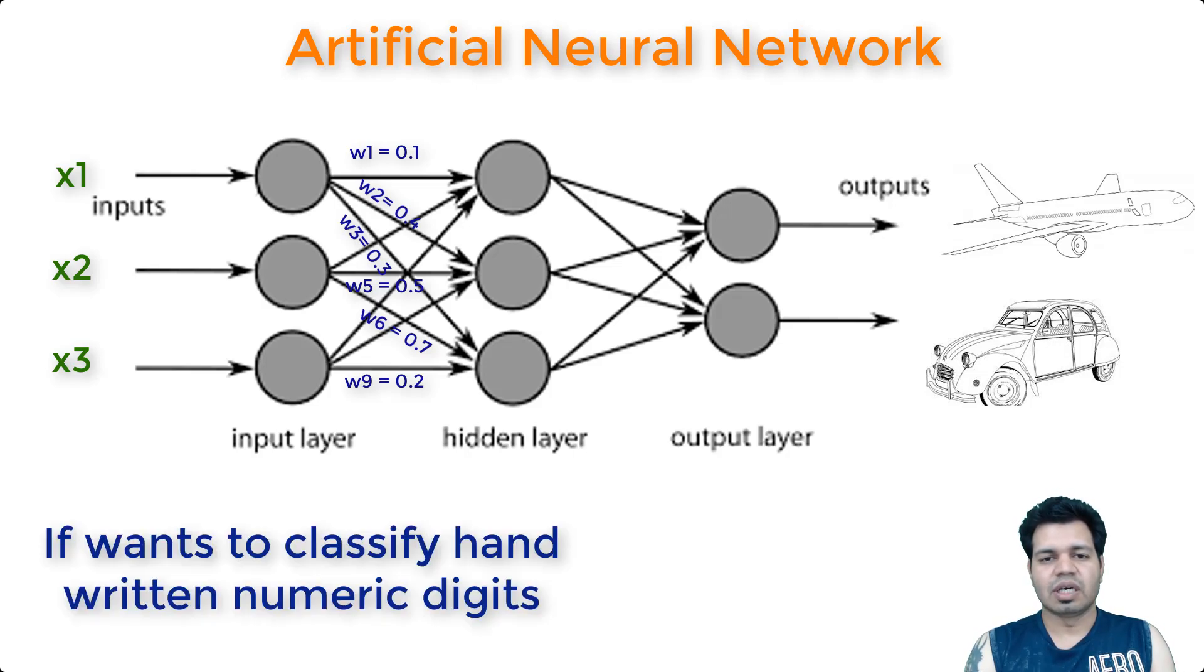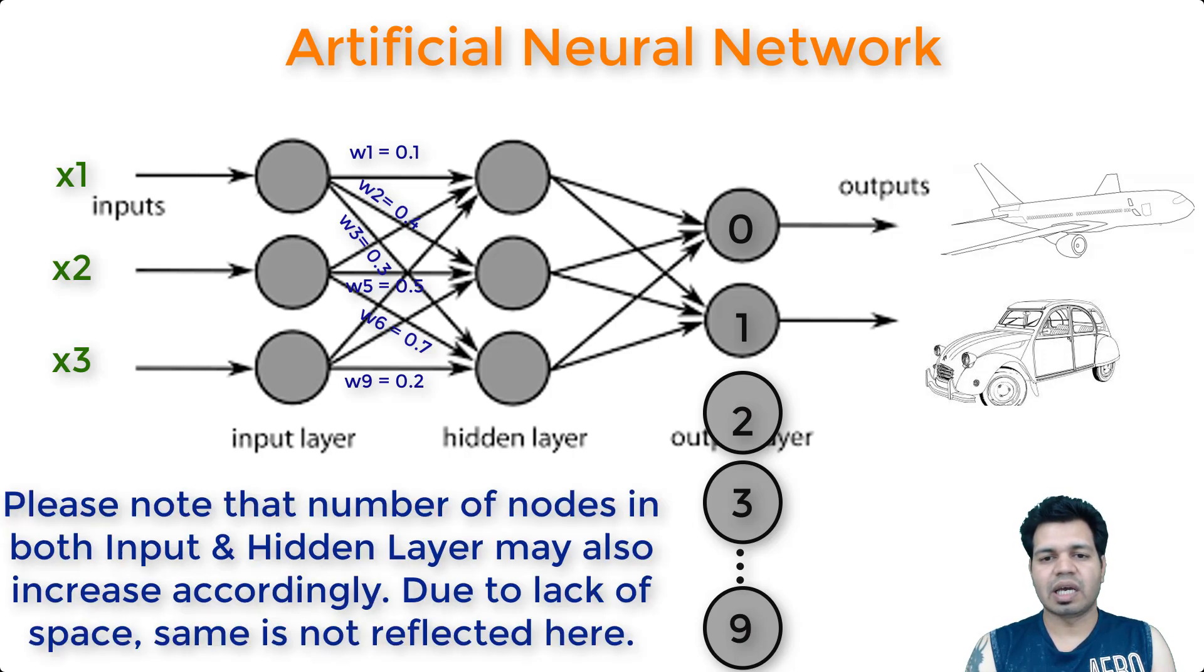If we want to classify numerical digits, let's say if we have 10 categories. When I'm saying 10 categories, I mean if we want to classify numerical digits from 0 to 9, that means 10 categories, correct, or 10 types of output. Then the output layer will have 10 nodes, each of them depicting a single digit. It depends on how many types of categories you are expecting to be classified. In the case of digits example, we have 10 digits 0 to 9, so essentially we will have 10 nodes here, and each node will represent a single digit.